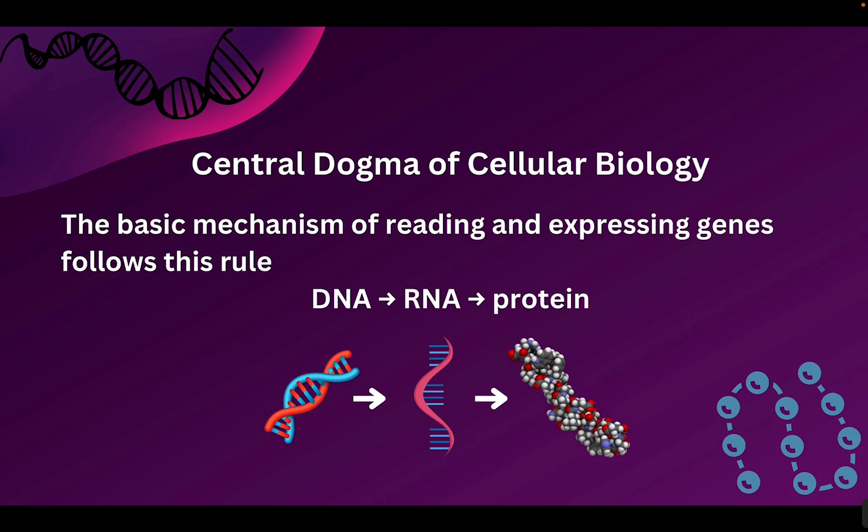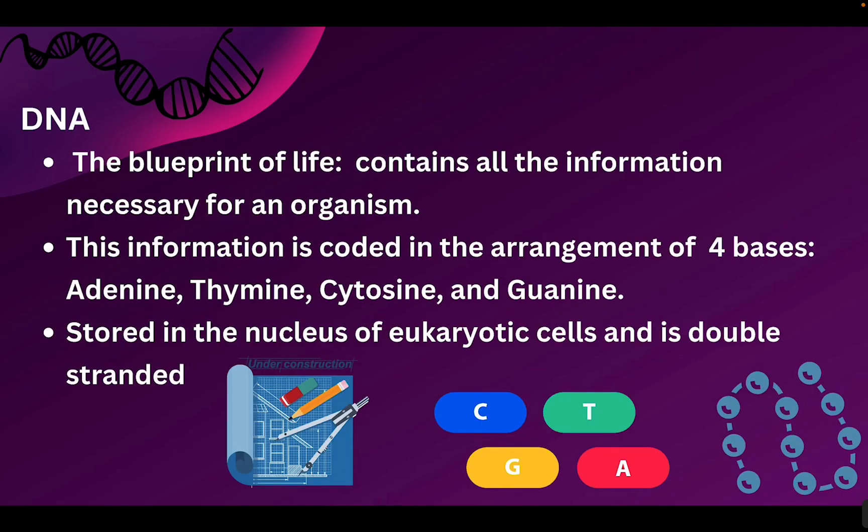This is happening in animals, plants, all living organisms — how we get from our information to our final product. So we're going to go through each part of the central dogma and talk a little bit about what each molecule is like and what it has.